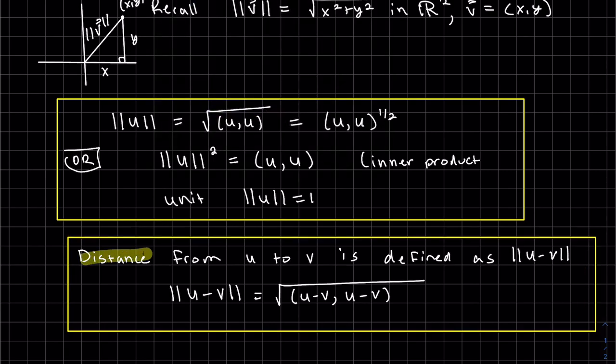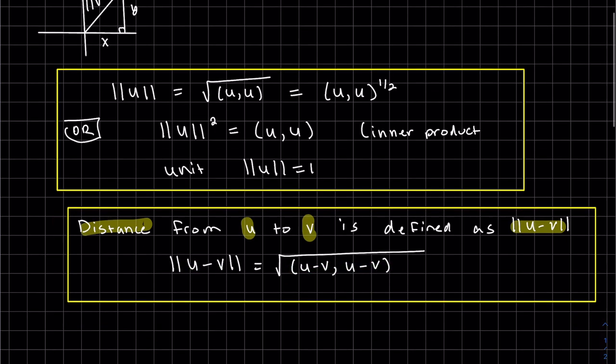Our distance between two elements is defined as the magnitude between the distance you subtract u and v. And it is the square root of the inner product of itself.